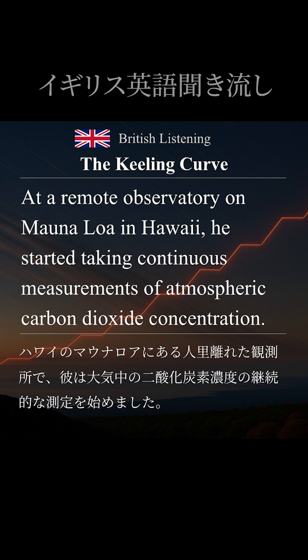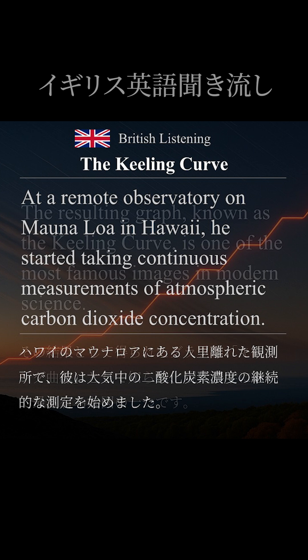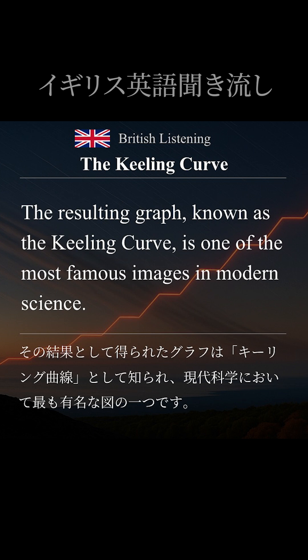At a remote observatory on Mauna Loa in Hawaii, he started taking continuous measurements of atmospheric carbon dioxide concentration. The resulting graph, known as the Keeling Curve, is one of the most famous images in modern science.